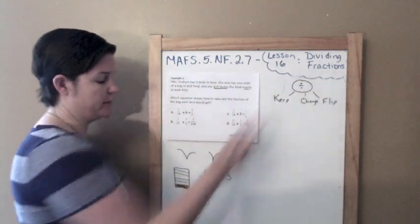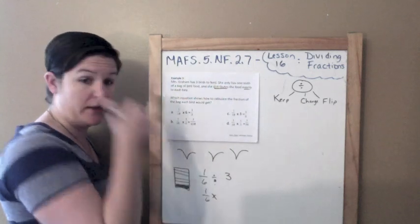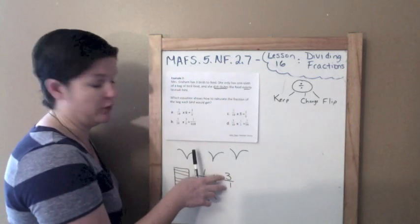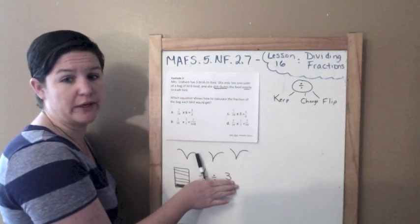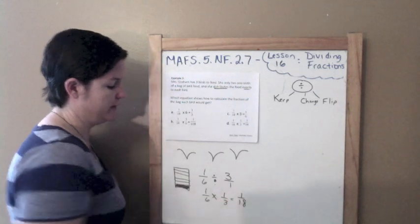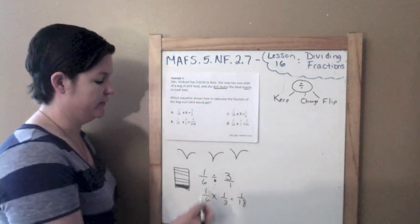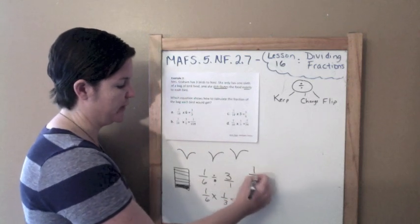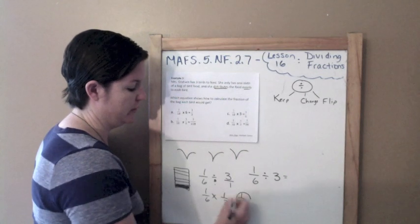Using keep, change, flip because I'm dividing fractions: I keep the 1/6, change the division sign to multiplication, and flip my fraction. The 3 becomes 3 over 1, and flipping that gives 1 over 3. So 1/6 times 1/3 equals 1/18. Now the problem is there's nothing in the answer choices that looks exactly like what I've done. We need to keep in mind that 1/6 divided by 3 equals 1/18.